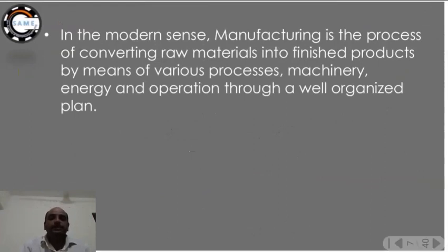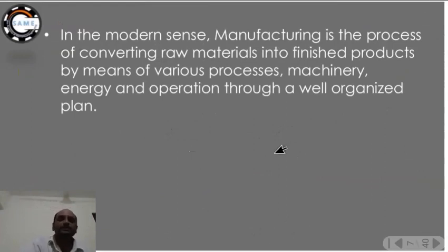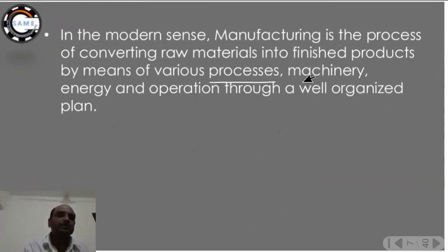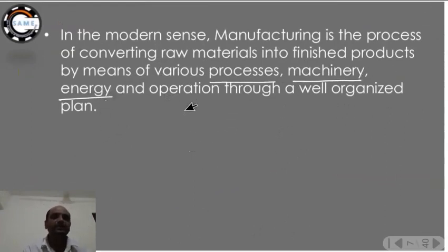In the modern sense, manufacturing is the process of converting raw metal into finished products by means of various processes, machinery, energy, and operations through a well-organized plan. Various processes, machinery, electrical energy, and operations through a well-organized plan are all required in the manufacturing process.